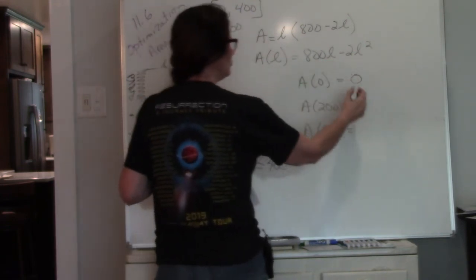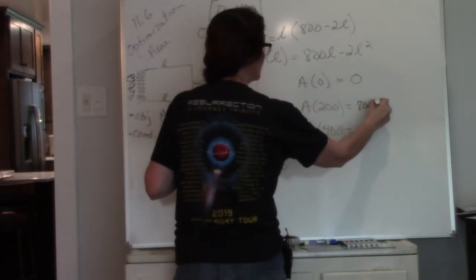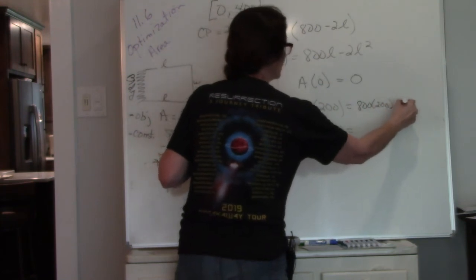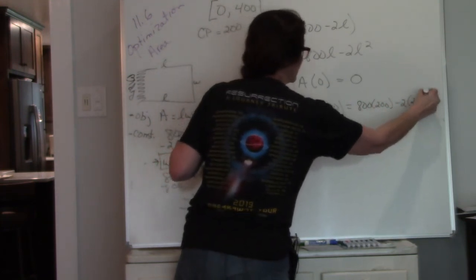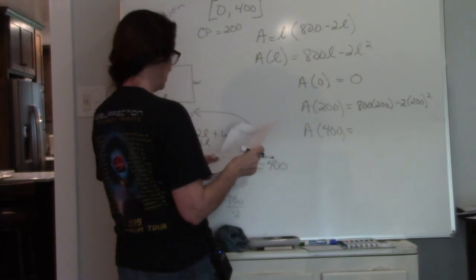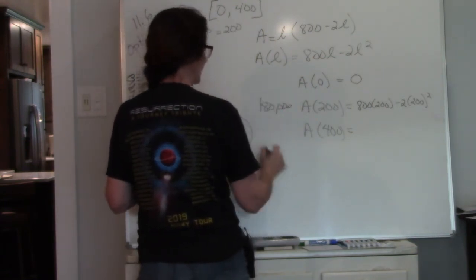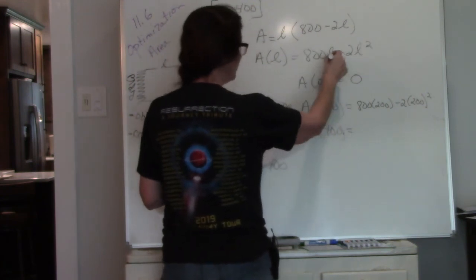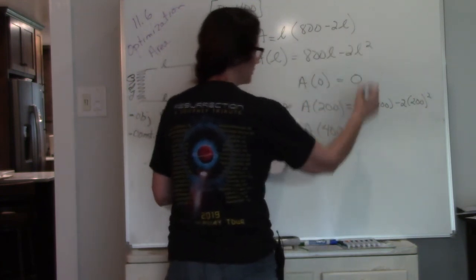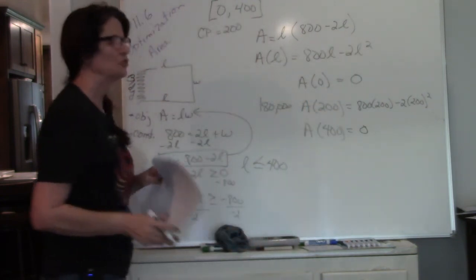When I plug 0 in here, I'm going to get 0 out. When I plug 200 into here, I'm going to get out 80,000.